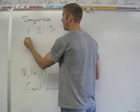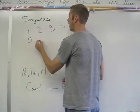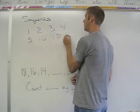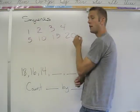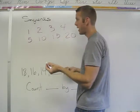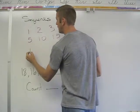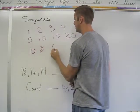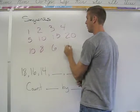They could also skip numbers, like 5, 10, 15, 20. Or maybe the sequence will go backwards — 10, 8, 6, 4.